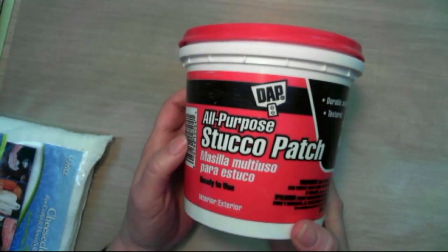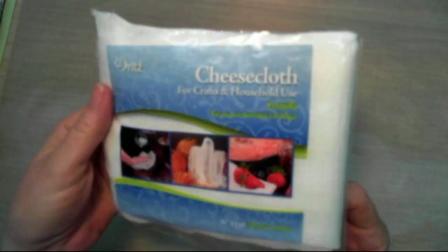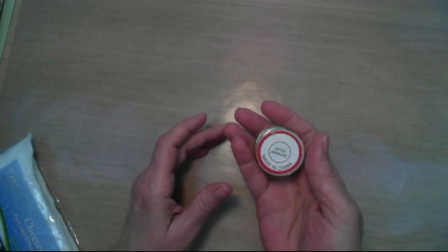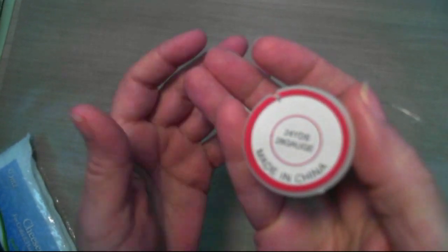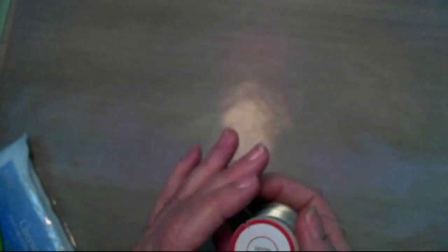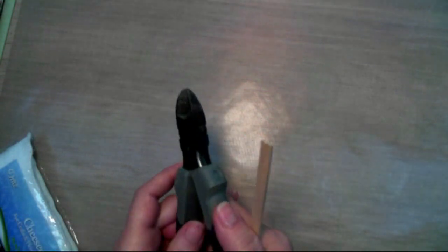Okay, this is what I used: the all-purpose stucco patch, and I got that at Lowe's. Here's a package of cheesecloth - it was a dollar from the dollar store - and some wire. This is 28 gauge, and you can use 28 gauge or 26 gauge, also some gesso.